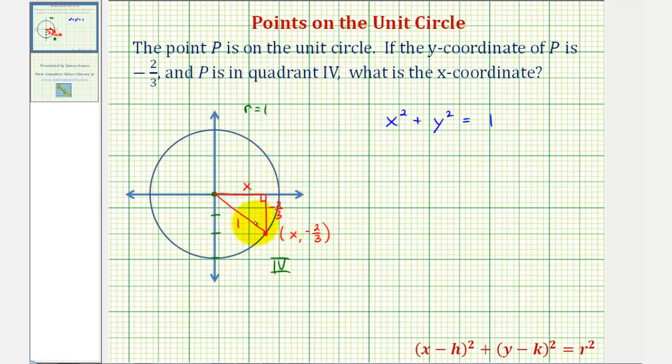If we use the Pythagorean theorem, we'll get the same results using this equation, once we substitute negative two-thirds for y.